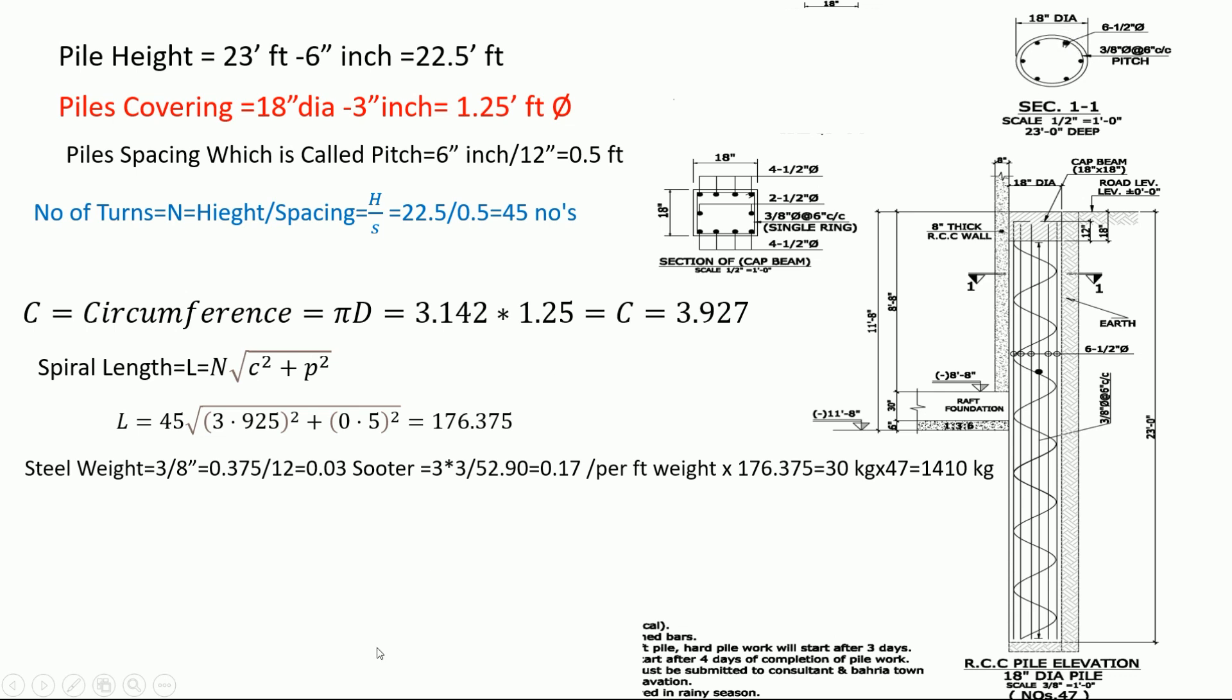Now we have vertical bar. Here, 6 bars. We multiply by the height: 6 times 22.5 equals 135 feet per pile. 47 number of piles, we multiply: 6345 times 0.302 per feet weight equals 1916.20 kg per 1000 equals 1.9162 tons.